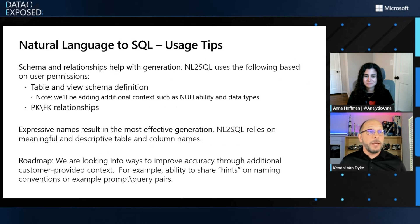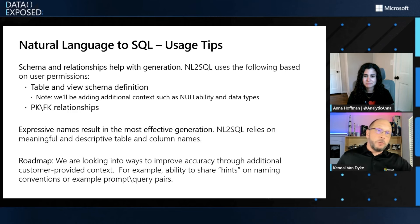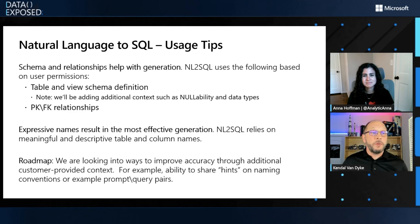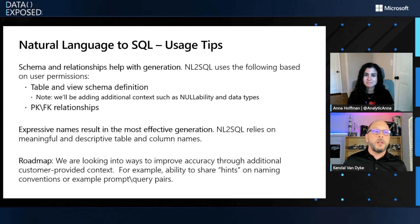When it comes to NL to SQL — natural language to SQL — a couple of other helpful things. We're going to use table and view schema definition information to help answer questions when you say 'tell me the top 10 sales for the last year.' If you provide schema names, that can also help. We look at things like primary key and foreign key relationships. So if you're giving us expressive, meaningful, and descriptive table and column names, that will improve the quality of the queries that natural language to SQL generates. We're looking in the future at how to improve accuracy — maybe allowing you to provide additional context like hints on naming conventions or specific examples of prompt and query pairs. That's something coming down the road.